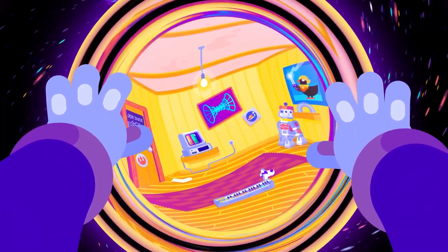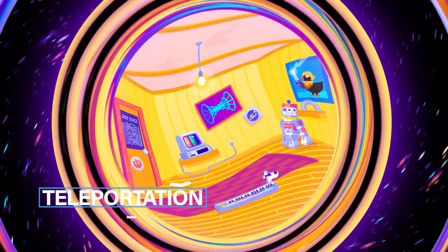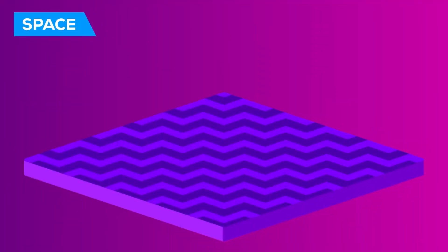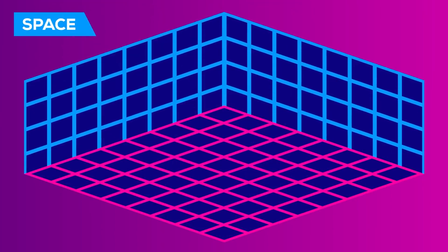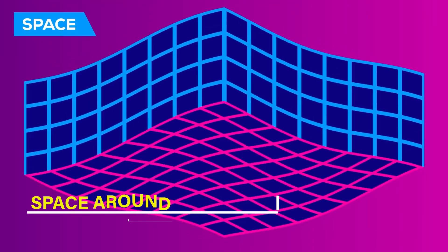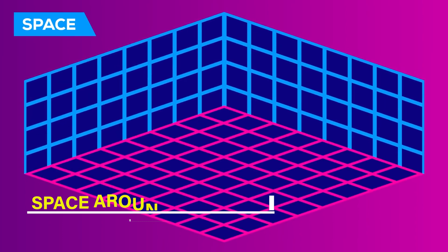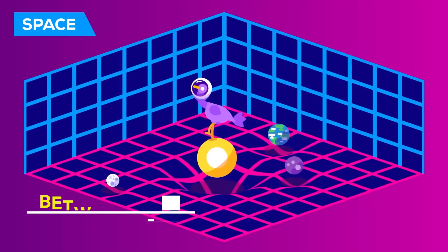The idea of bending space involves manipulating the fabric of space-time itself. By altering the space around an object, theoretically, one could reduce the distance between two points, allowing for seemingly instantaneous travel.